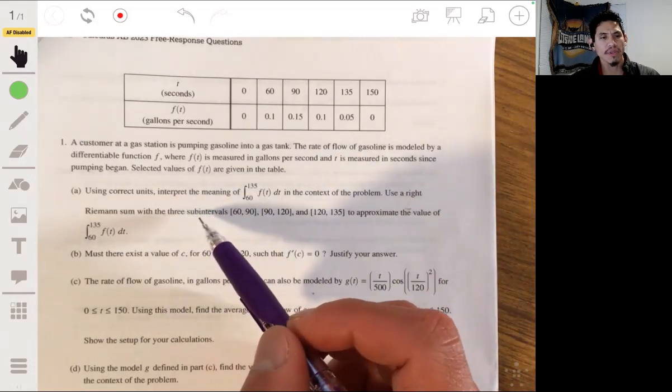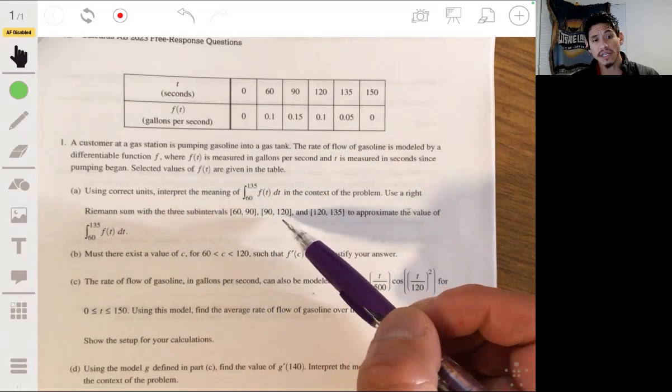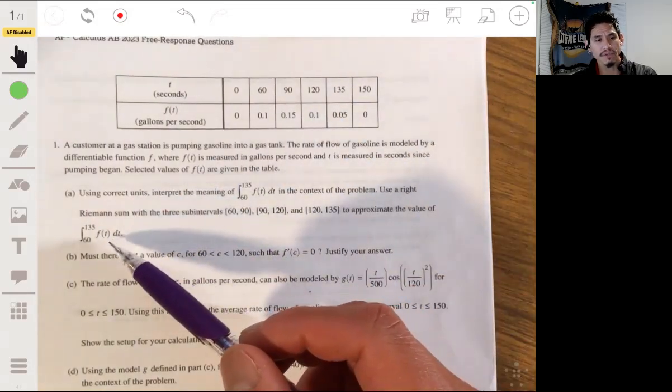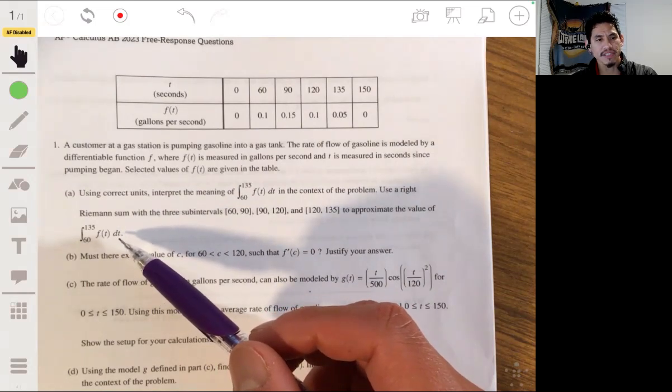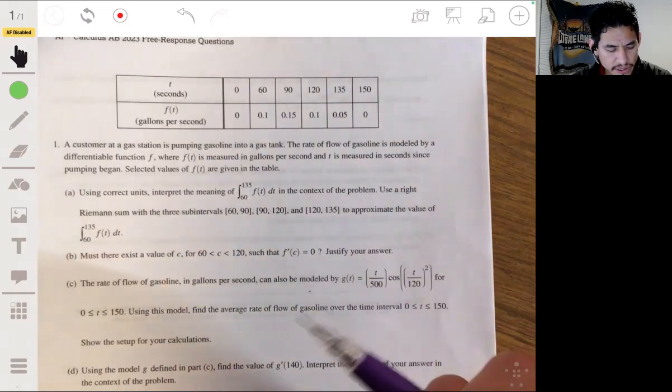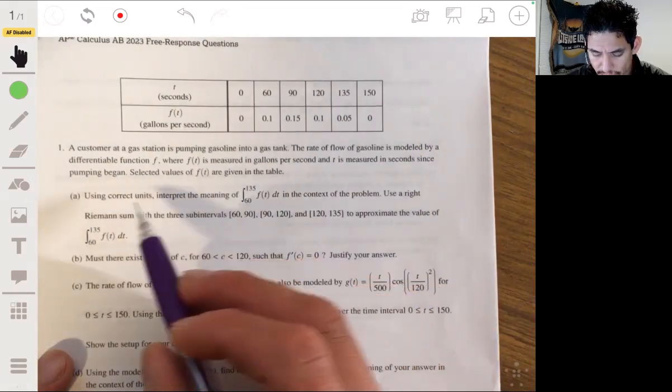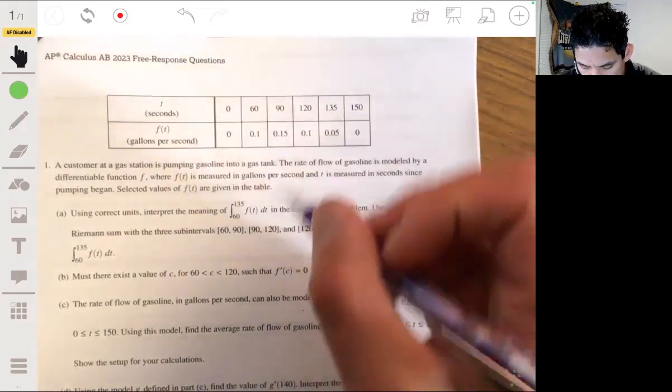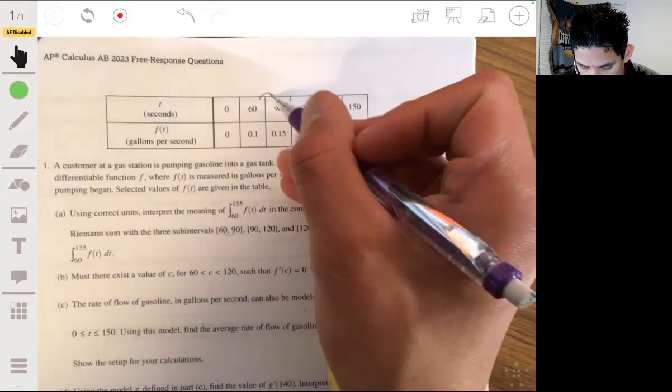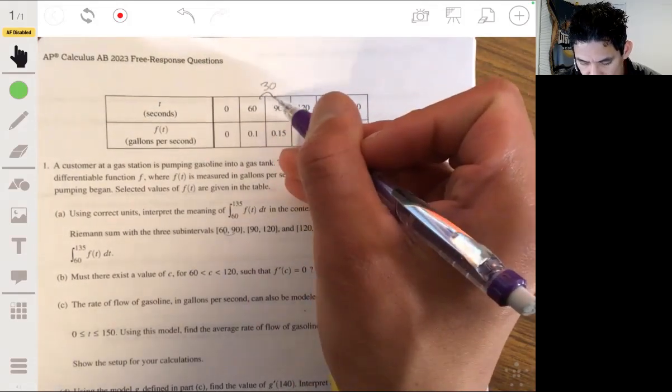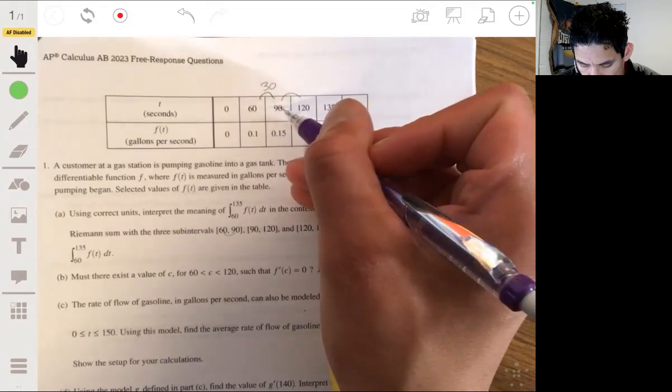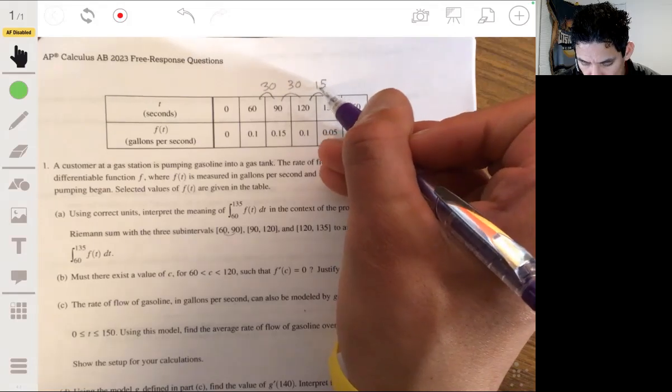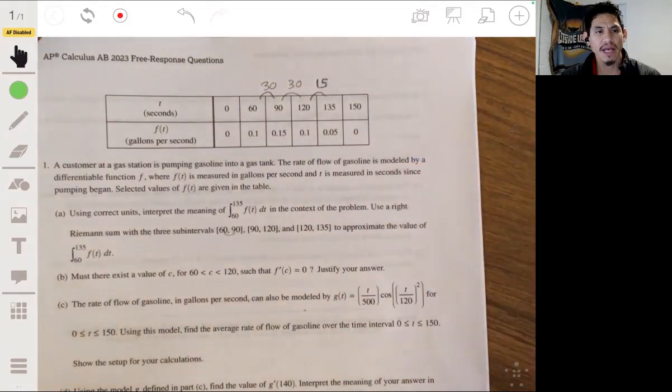Use a right Riemann sum with the three subintervals 60 to 90, 90 to 120, and 120 to 135 to approximate the value of the integral from 60 to 135 of f(t)dt. So remember with the Riemann sum, it's basically you're making rectangles, approximations of rectangles where the base are the length of these intervals. So 60 to 90 is 30, 90 to 120 is also 30, and then 120 to 135 is 15.